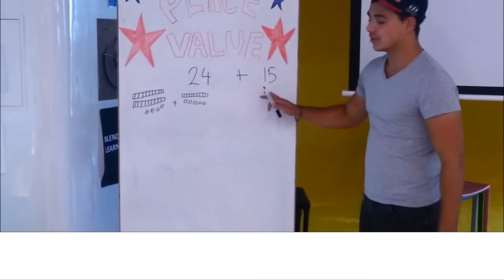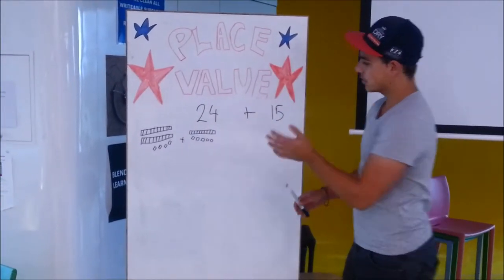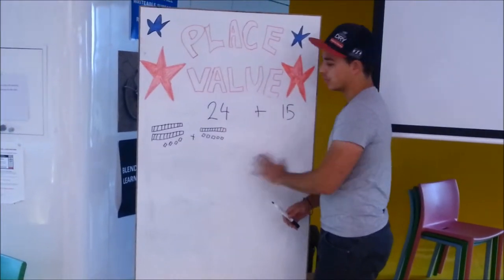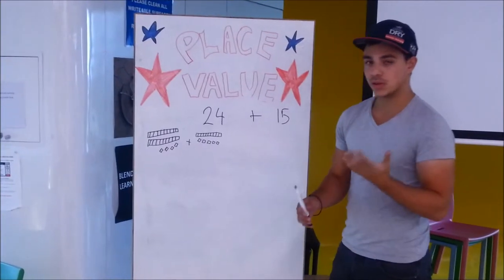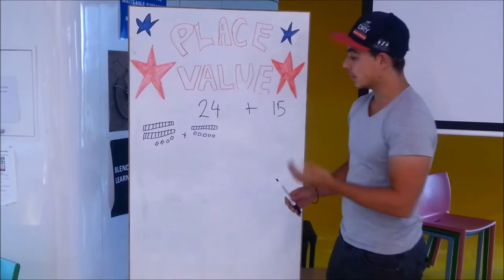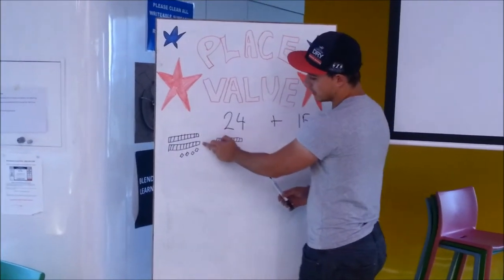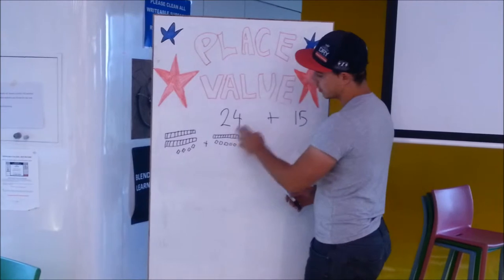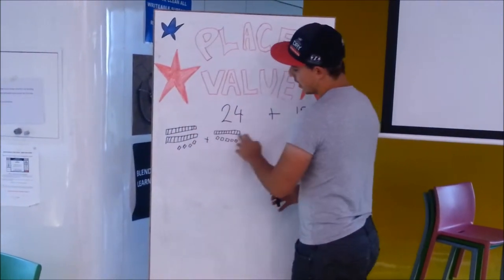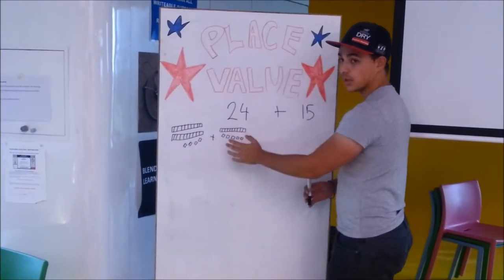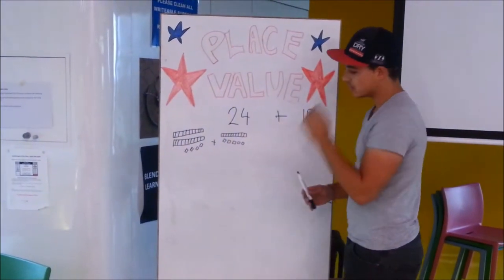Here we've got a simple addition that students can do. As you can see, they're represented in symbols and also in MAB blocks. The best way to do it initially is to explain it with the MAB blocks. So you've got your tens and your 4 units — that's 24 — and you've also got 15 over here. To add them together, you start off with the units.